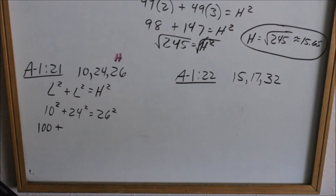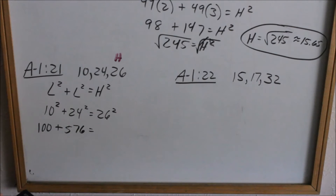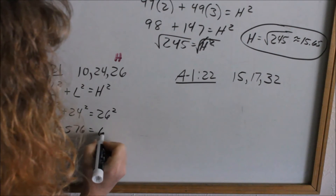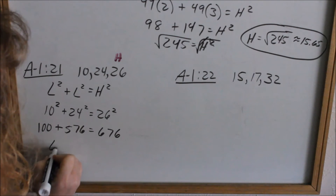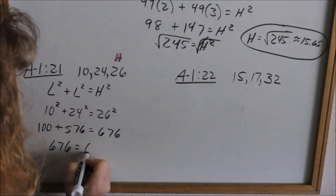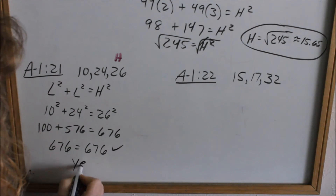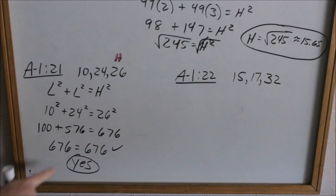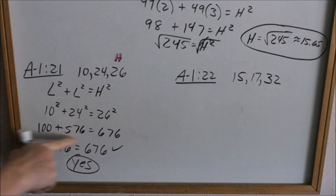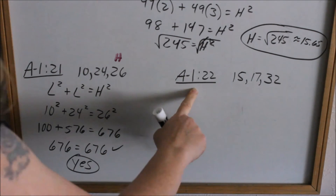24 squared is 576, and 26 squared is 676. 100 plus 576 equals 676 — that is a true statement. So yes, these numbers do make a right triangle because the statement is true.